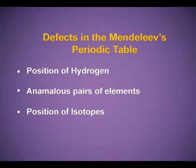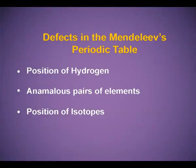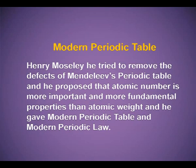Position of Isotopes — as we know that isotopes have different atomic weights, but Mendeleev placed them together. There was also no place assigned for the noble gases since they were not discovered at the time of Mendeleev.